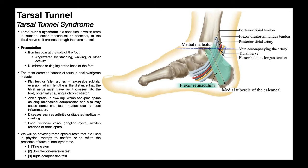Here are some common causes of tarsal tunnel syndrome. First, flat feet or fallen arches — the technical term is pes planus. Somebody with pes planus has pronated feet, specifically excessive pronation at the subtalar joint. Excessive subtalar pronation means excessive subtalar eversion, which stretches the medial aspect of the ankle and therefore the contents of the tarsal tunnel — in particular, the tibial nerve. This lengthens the distance the tibial nerve must travel into the foot, causing a chronic stretch that can irritate it.